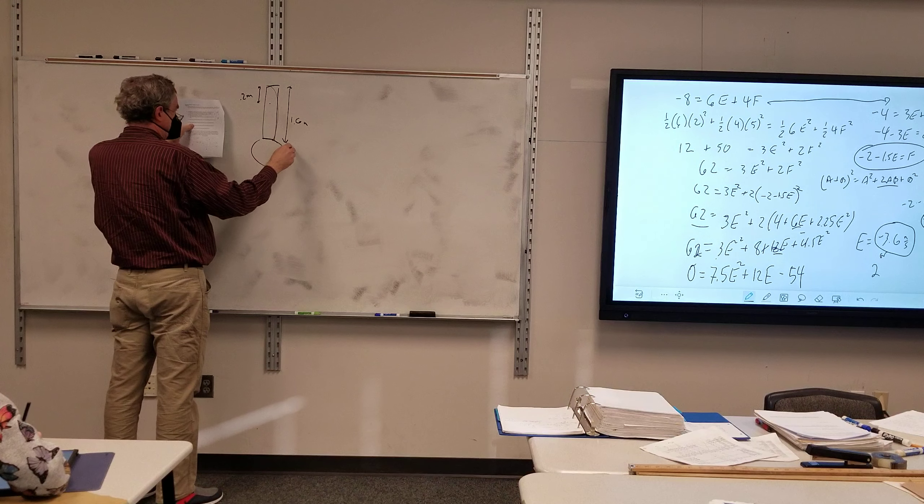And so I need to solve for one of the letters and plug it into the other equation. So let's take this one. So I got negative 4 is equal to 3E plus 2F. And let's solve for F. So I got negative 4 minus 3E is equal to 2F. F is equal to negative 2 minus 1.5E.